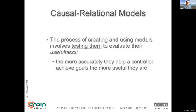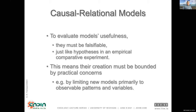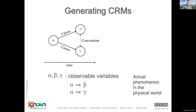The process of creating these models based on observation involves testing them to evaluate their usefulness for getting stuff done. The more accurately and reliably they help the controller achieve its goals, the more useful they are essentially. So how does this evaluation of the model's usefulness proceed? Actually, let me jump ahead to an example.